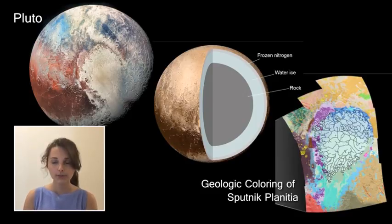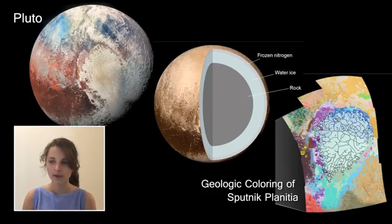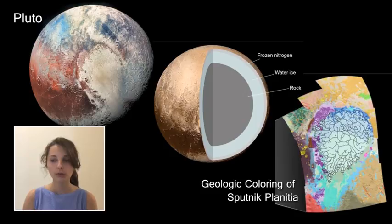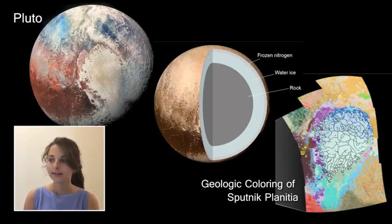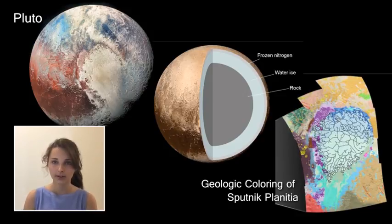Pluto has five major moons, the largest of which, Charon, will be covered later in the presentation. Pluto is the namesake of the Plutoids, or ice dwarfs, which are dwarf planets found outside the orbit of Neptune. Scientists suspect that there may be up to 200 Plutoids in the Solar System.